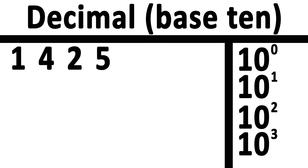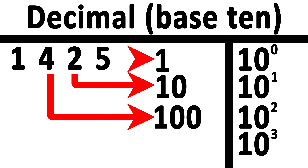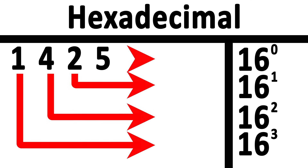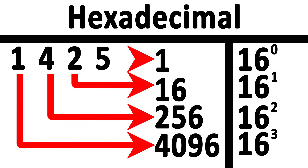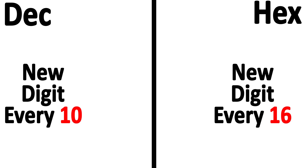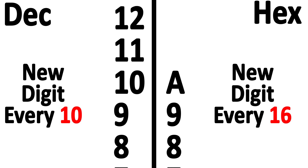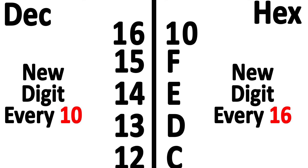In our normal decimal system, the columns represent ones, tens, hundreds, thousands, and so on. In hexadecimal, the columns represent ones, 16s, 256s, 4096s, and so on. Because we only have digits 0 through 9, hexadecimal represents the numbers 10 through 15 using uppercase letters. So counting past 9 in hexadecimal goes: 7, 8, 9, A, B, C, D, E, F — then we add 1 to the left column and start again from 0.